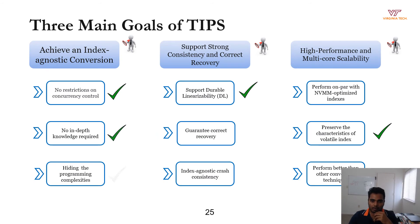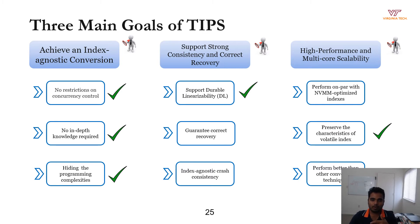With the plugin programming model, developers do not require in-depth knowledge on the volatile codebase. TIPS hides the complexities of NVMM programming such as logging and persistence guarantees under the API, so developers do not have to consider them explicitly. We believe this will make the overall conversion process significantly simpler and less error prone.